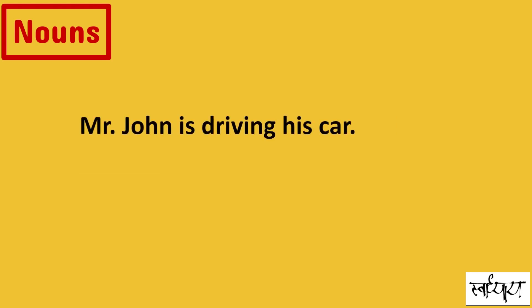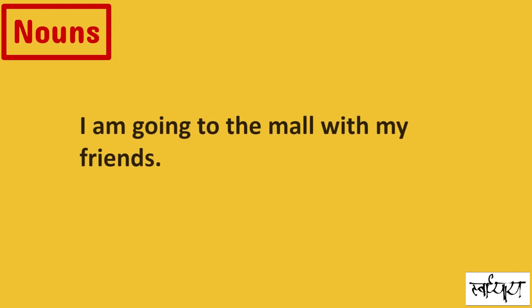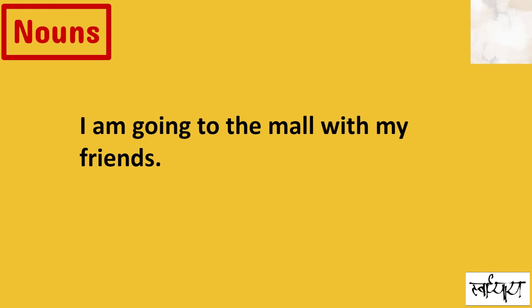Mr. John is driving his car. Mr. John is the name of a specific person and car is a thing. So Mr. John and car are nouns in this sentence. I am going to the mall with my friends. Mall and friends are nouns in this sentence.